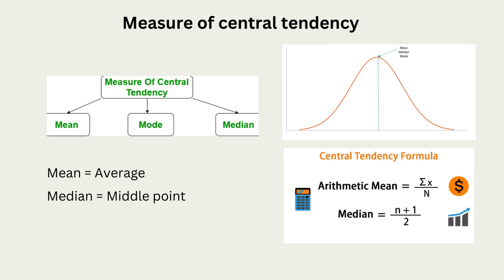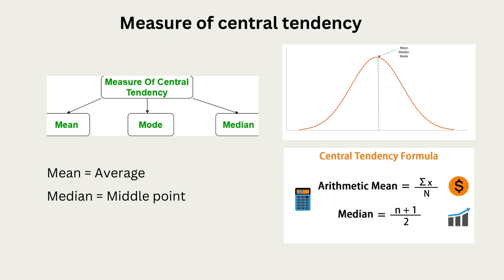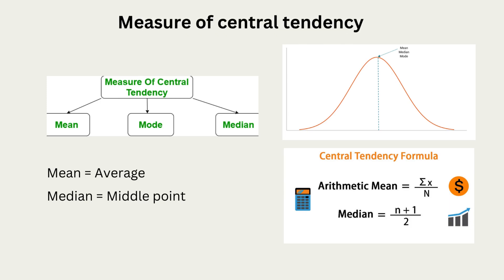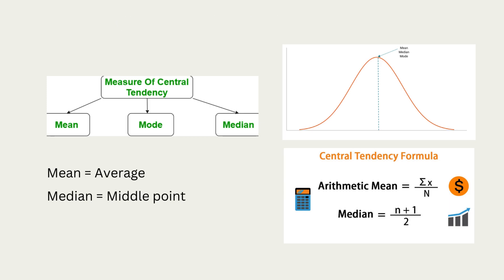Theoretically speaking, mean is the average value of all your observations, whereas median is the middle value of all your observations. Formulas to calculate mean and median are given on the screen. However, I would like all of you to focus more on the difference between mean and median and when you should use both of these measures in your analysis.